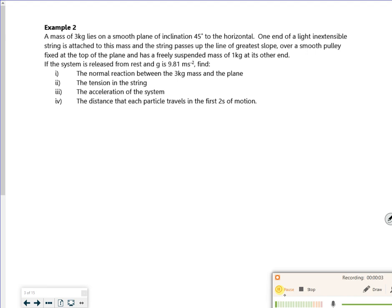Hi, so we've got another one now, so second example. Do you know what, these are all much of a muchness, like I said. I really like these. So we've got a mass of 3kg lies on a smooth plane here inclined at 45 degrees to the horizontal. One end of a light inextensible string is attached to the mass and the string passes up the line of greatest slope, so that means it's parallel to it, over a smooth pulley fixed at the top of the plane and has a freely suspended mass of 1kg at the other end. Right, should we draw a picture?